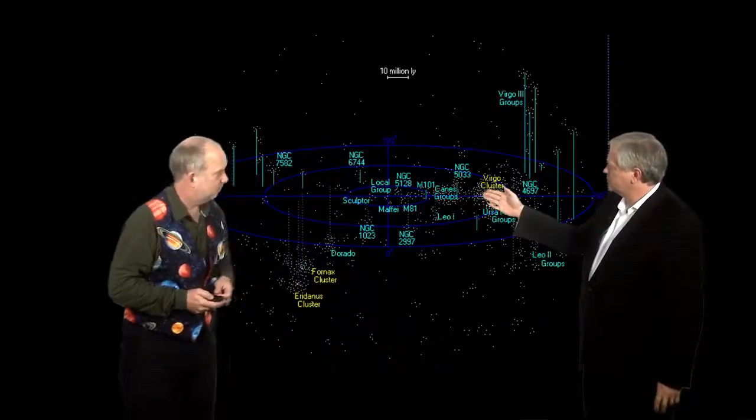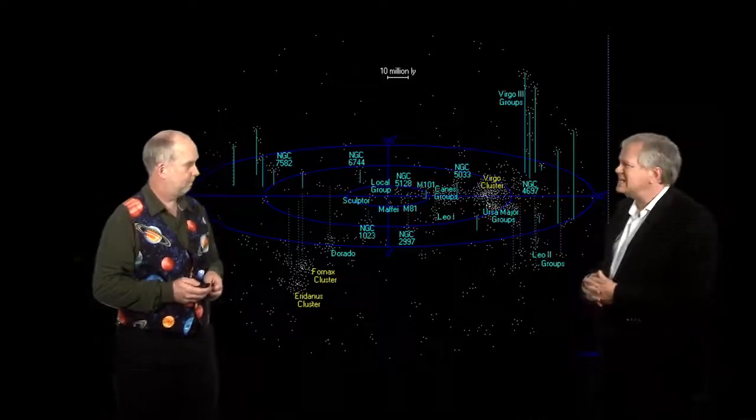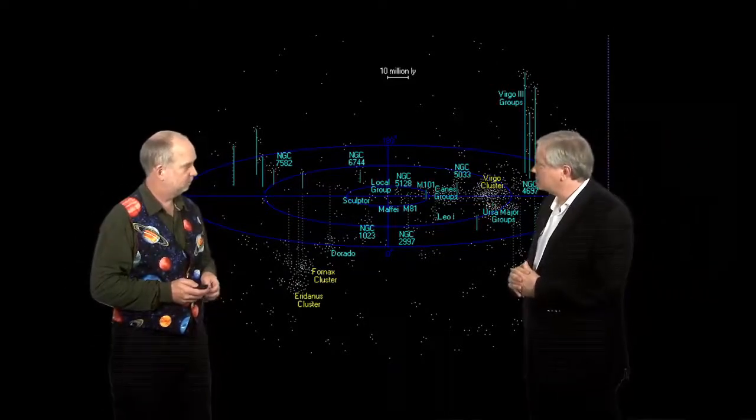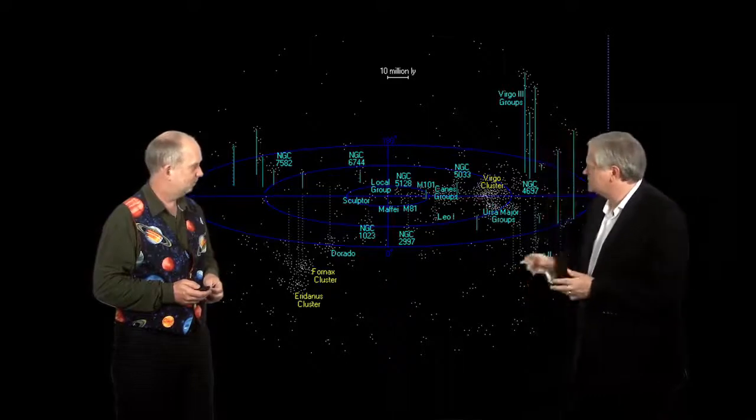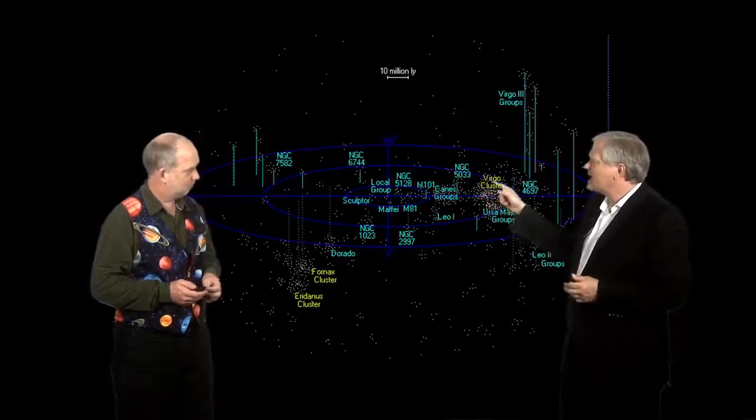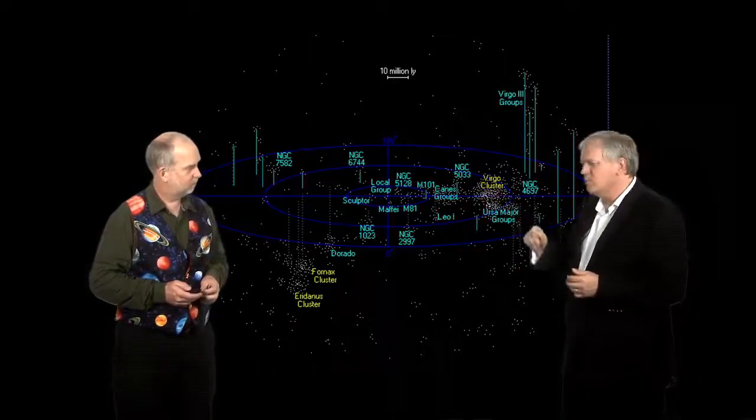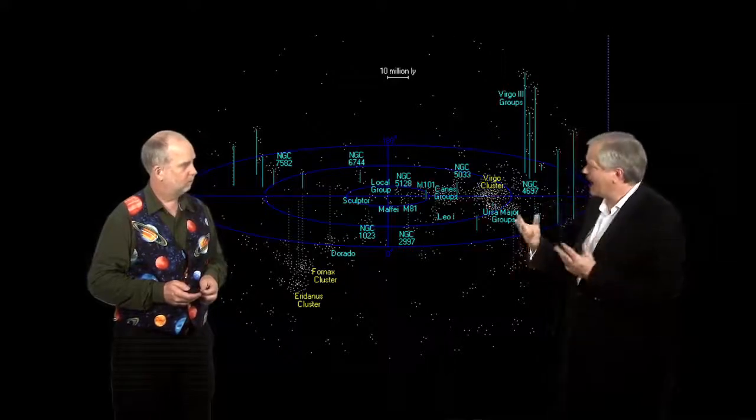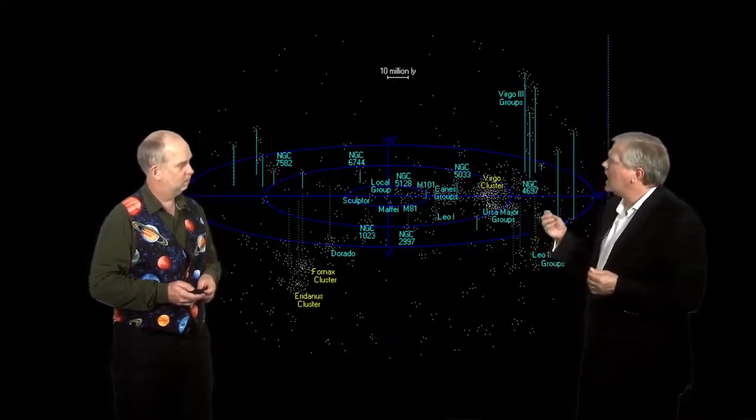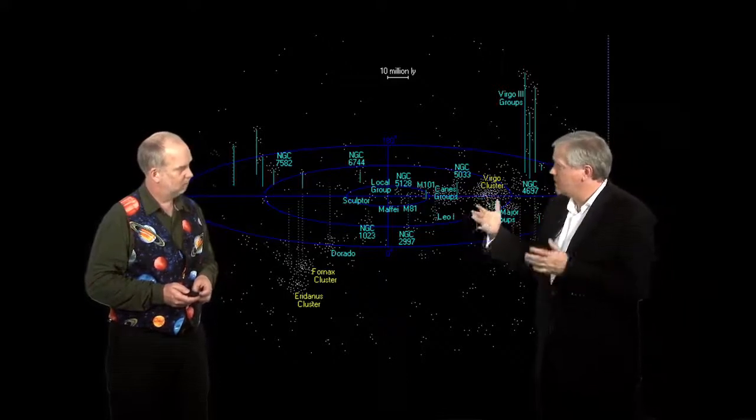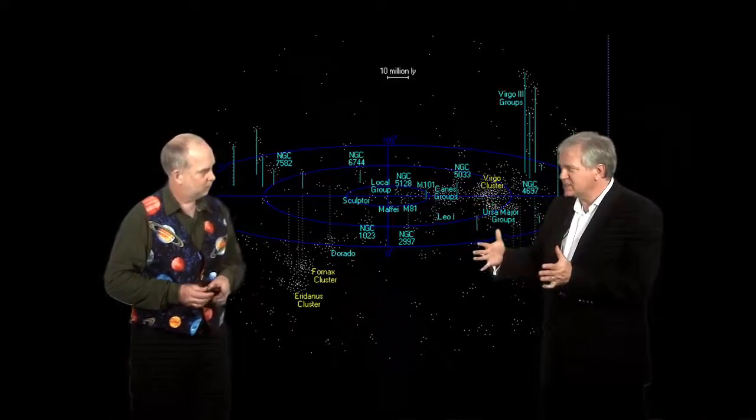So, the Virgo cluster, from memory, is about 16 megaparsecs, or 50 million light-years in distance. And when we observe the galaxies there, they're moving at a rate, on average, of about 1,100 kilometers per second. So, that's how much space has expanded.